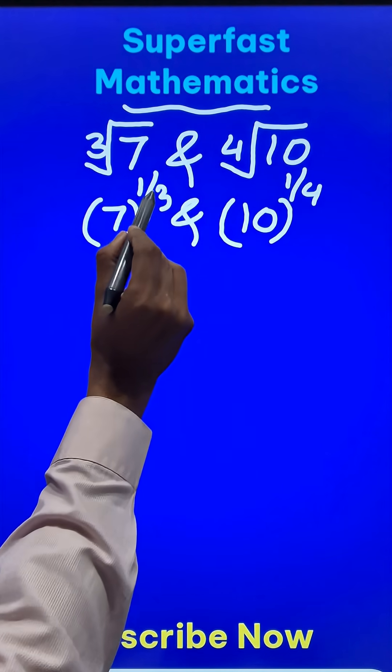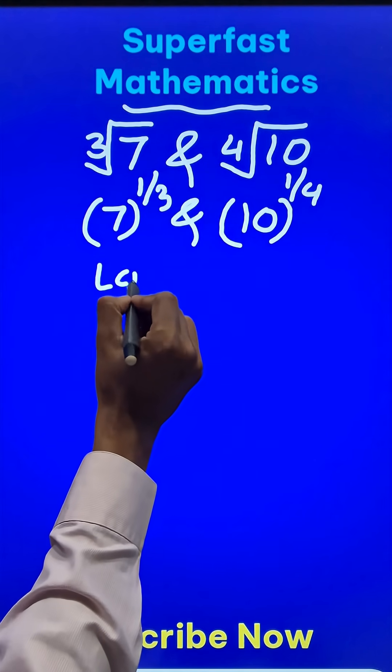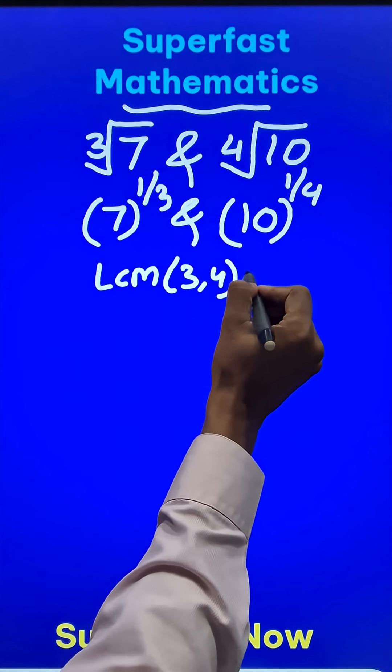For 1/3 and 1/4, the denominators are 3 and 4. The LCM of 3 and 4 is 12.